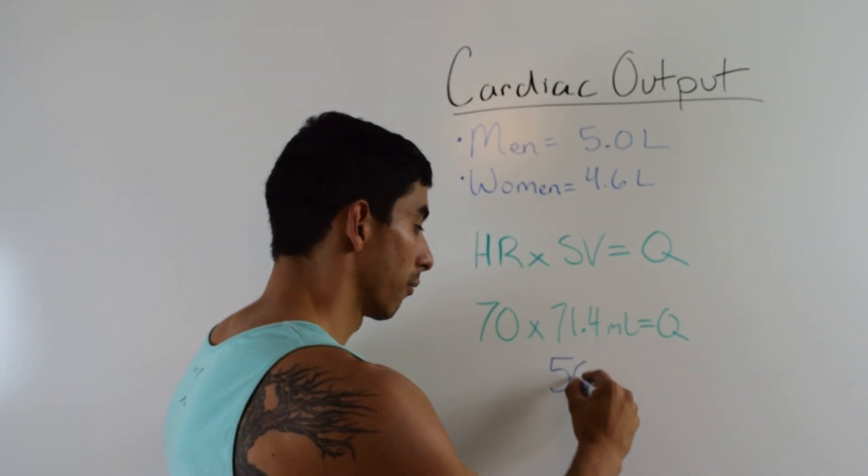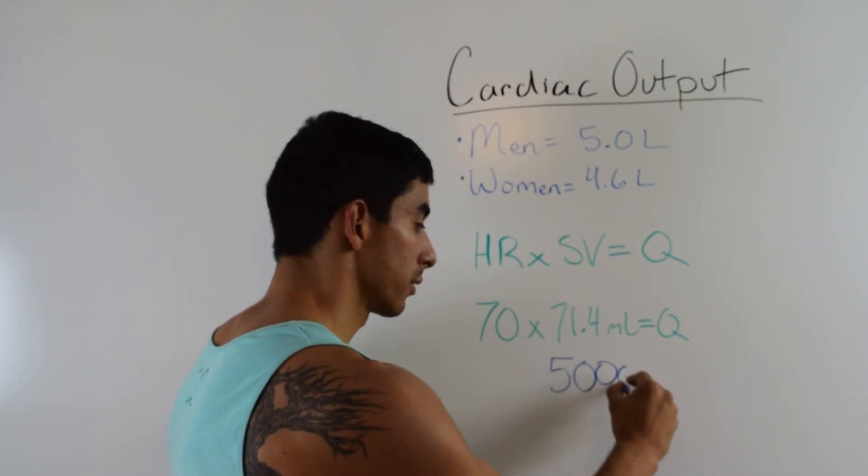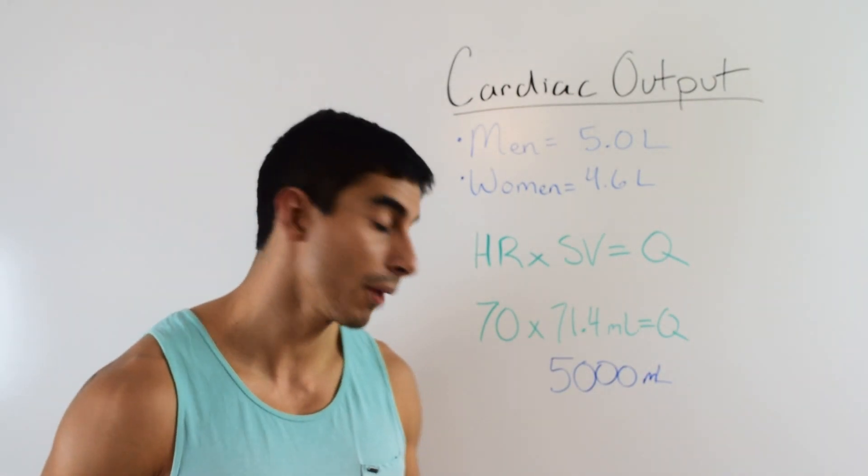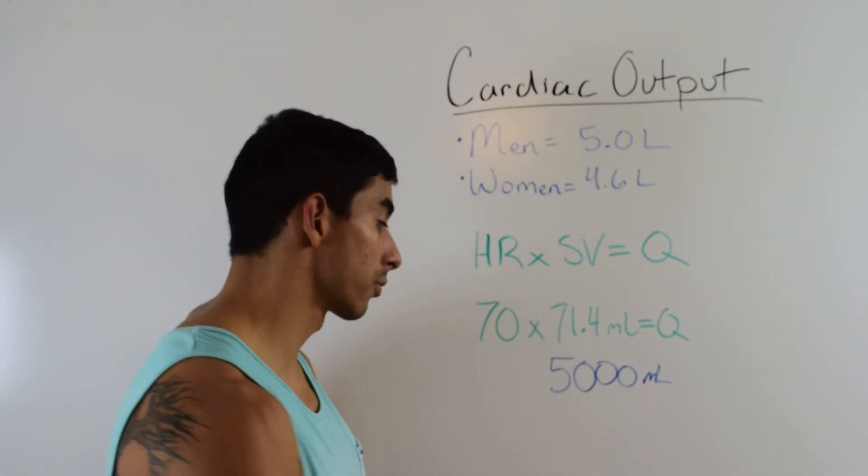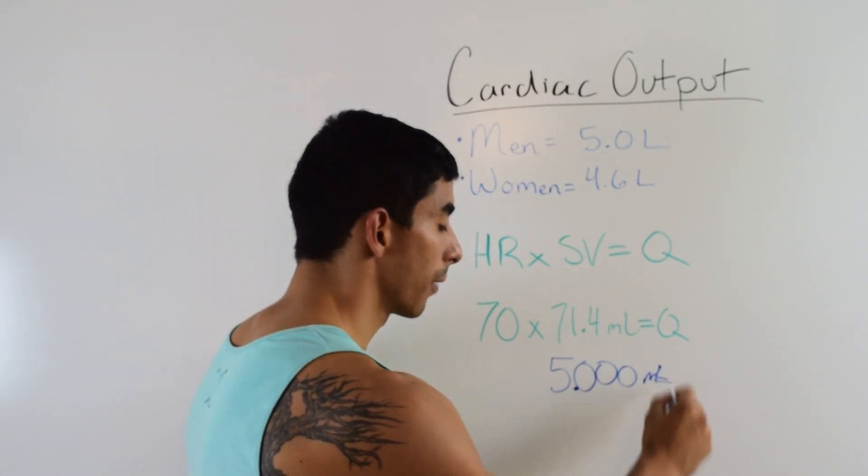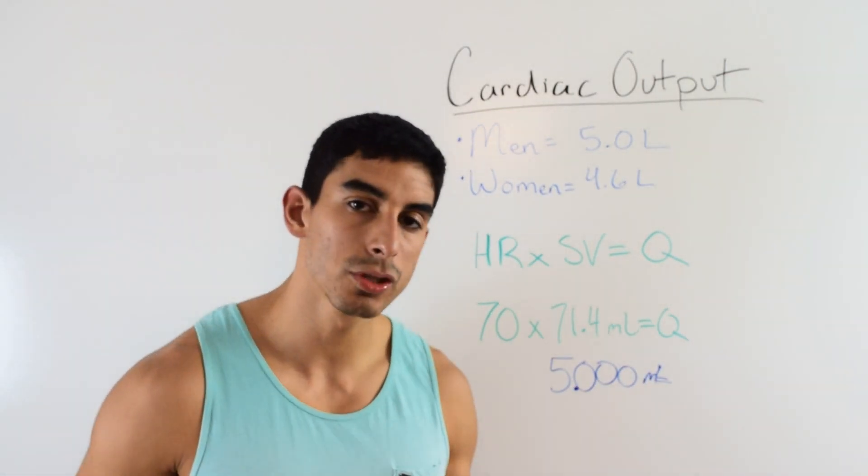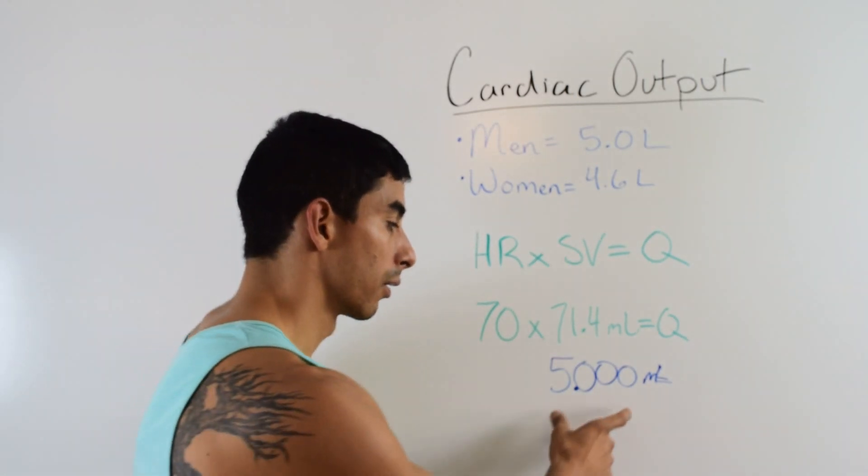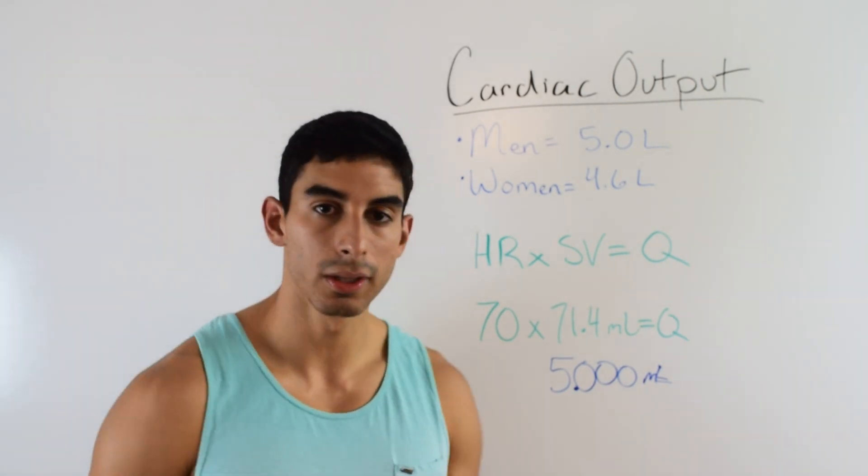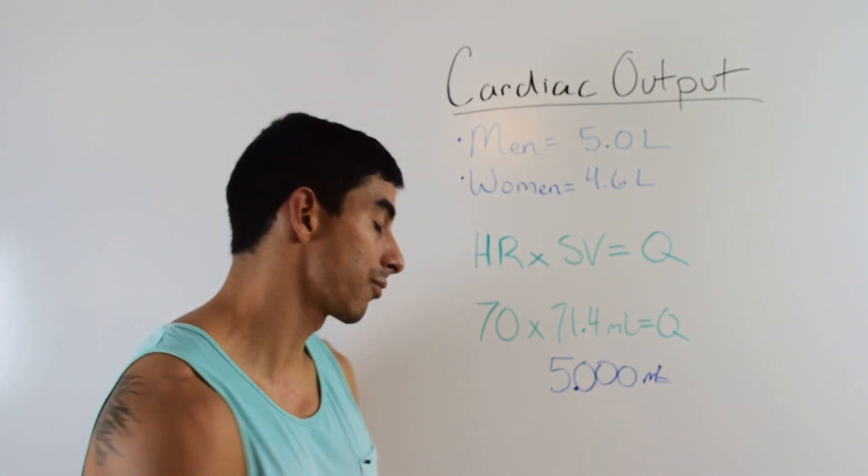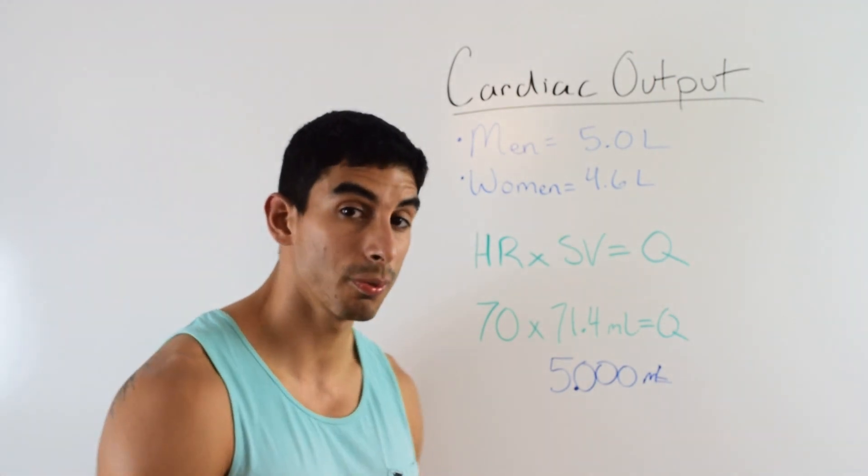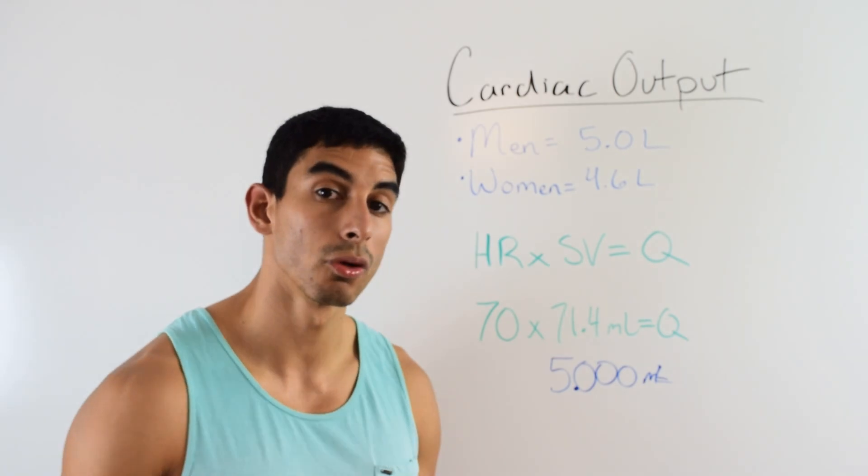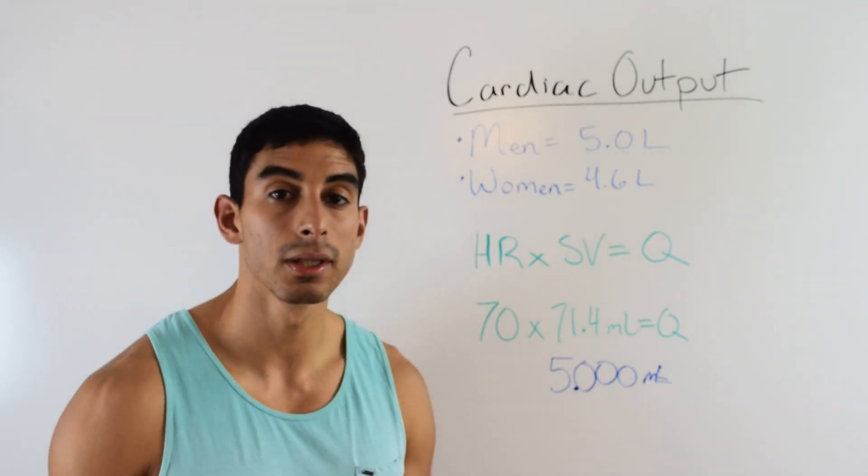That's going to be 5,000 milliliters. And if you know basic metric system math, 5,000 milliliters equals five liters. You're not going to get any confusing questions on the exam where you make this multiplication and it ends up being where they put five liters, 50 liters, 0.5 liters. You're not going to see that. What you're going to see is five liters, 4.6 liters, 3.7 liters, etc. They just want to make sure that you know the equation, not necessarily that you know how to convert milliliters to liters.